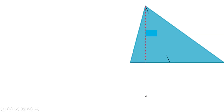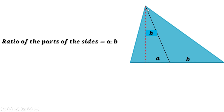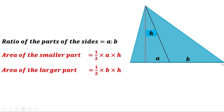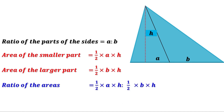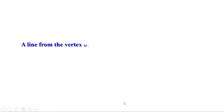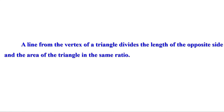Let us generalize. Take a triangle where the base is divided into parts of length A and B, and the height is X. The ratio of the parts of the side is A:B. The area of the smaller triangle is half into A into X, and the larger is half into B into X. The ratio of the areas is (half·A·X) : (half·B·X). Since half and X are common, they cancel, giving A:B. Therefore, a line from the vertex divides the length of the opposite side and the area of the triangle in the same ratio.